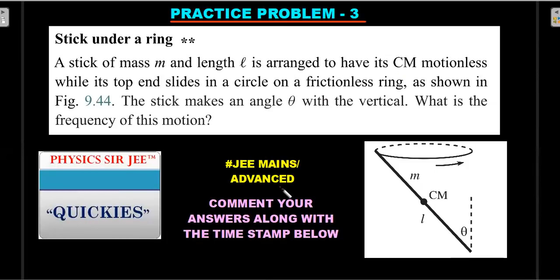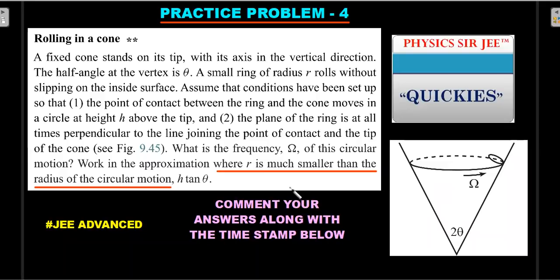Practice problem three is at JEE Advanced or mains level. It's the reverse of the finger-and-ring: this time the ring is fixed, and a stick under the ring moves on it. Read the question carefully word by word, understand the situation, and calculate the frequency of motion. This problem is picked from Morin, a consistent source of JEE rotation problems over the last 10 years. Comment your answer with a timestamp — it's an accessible question.